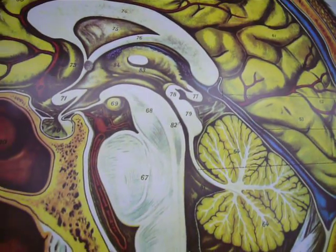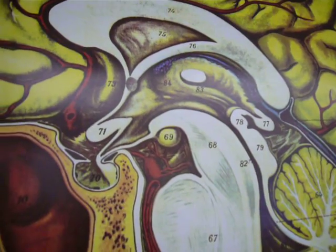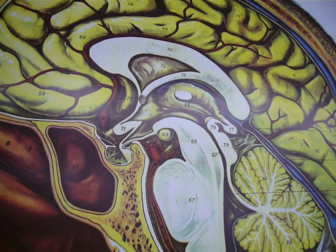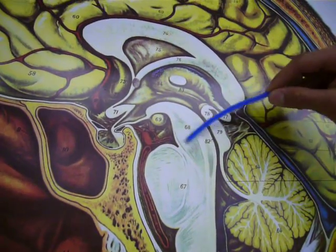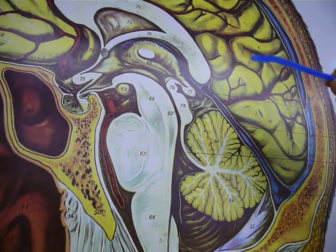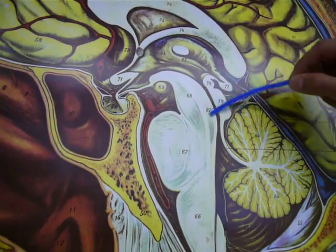We have the mammillary body, the cerebellar peduncles, cerebral peduncles, the cerebral aqueduct, it's going to be right next to it, actually.